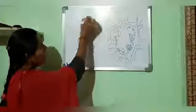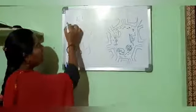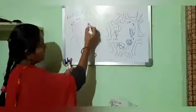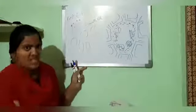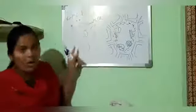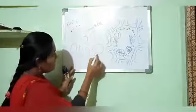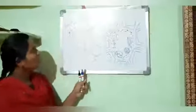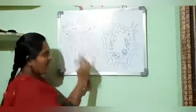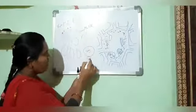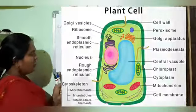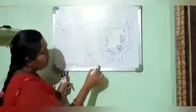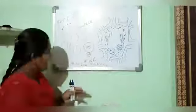Other important cell organelles include the endoplasmic reticulum, which is a network of tubules, vesicles, and cisternae structures. If it is associated with ribosomes, it is called rough ER; without ribosomes it is smooth ER. The endoplasmic reticulum is involved in the production of ribosomes, and ribosomes are involved in the production of RNA — including mRNA, snRNA, etc.